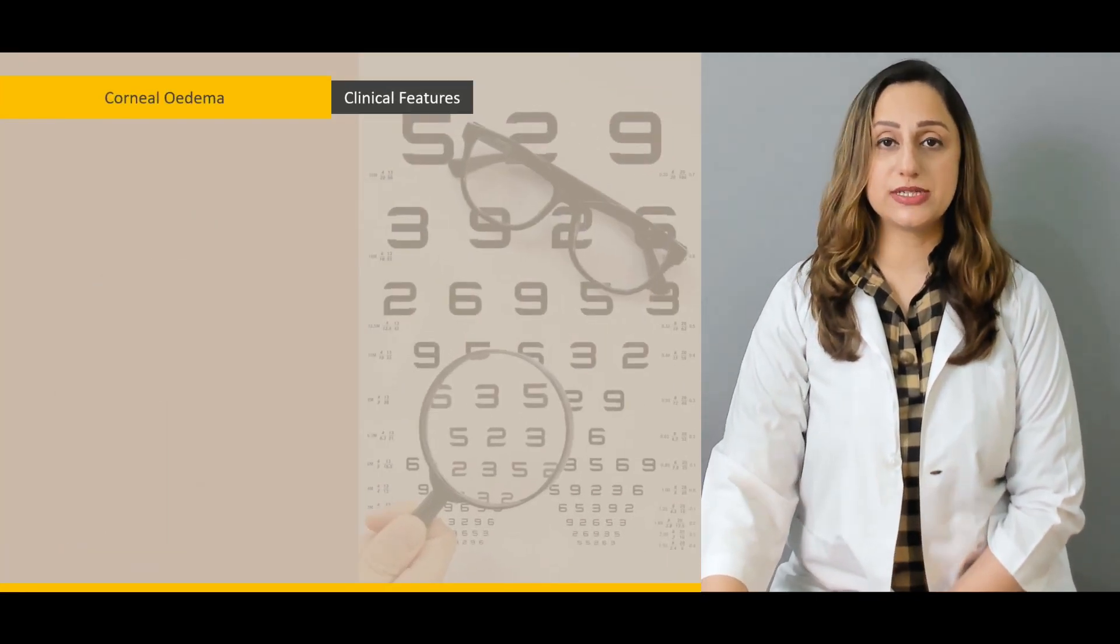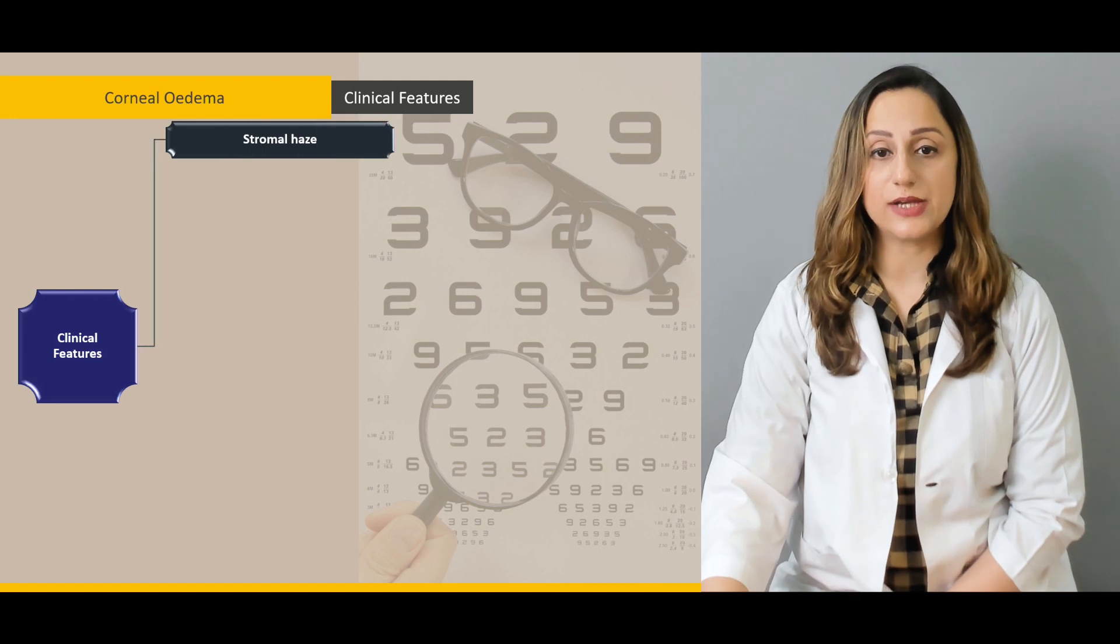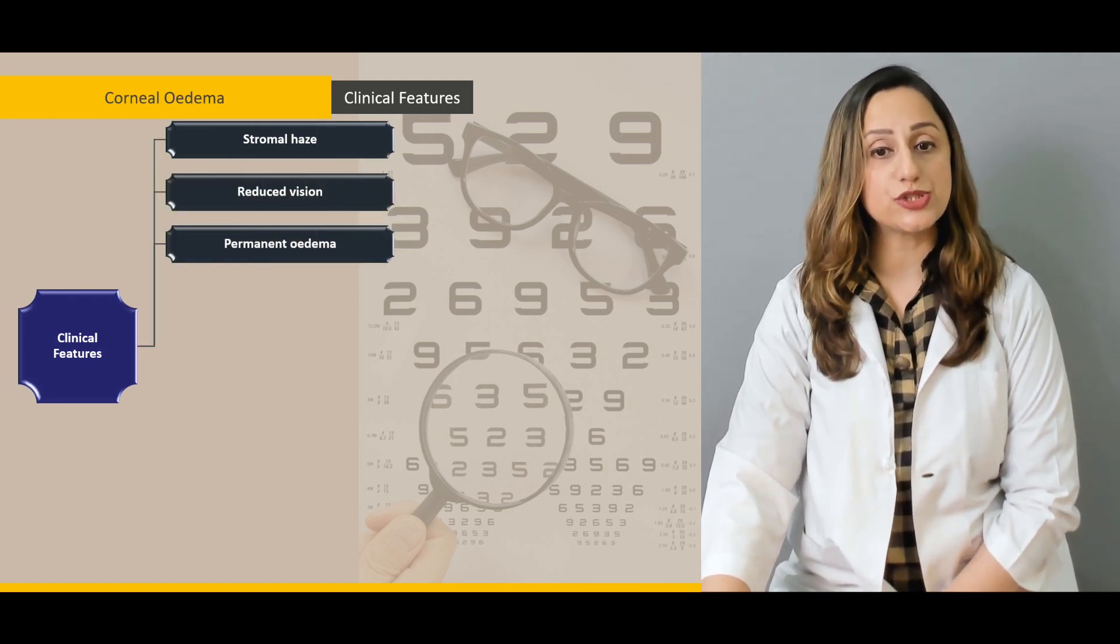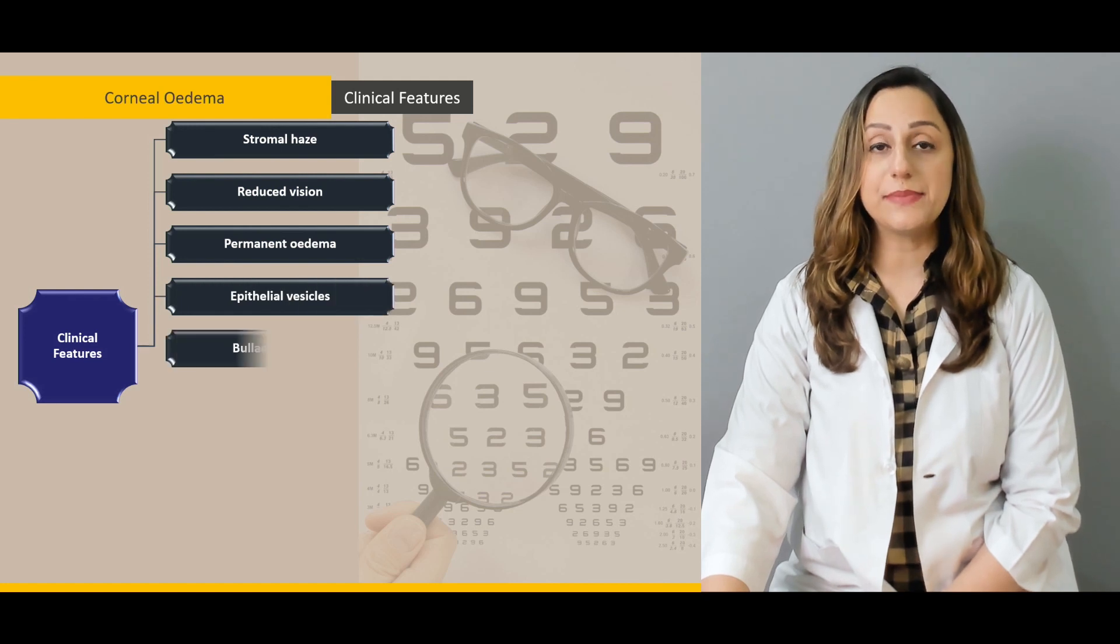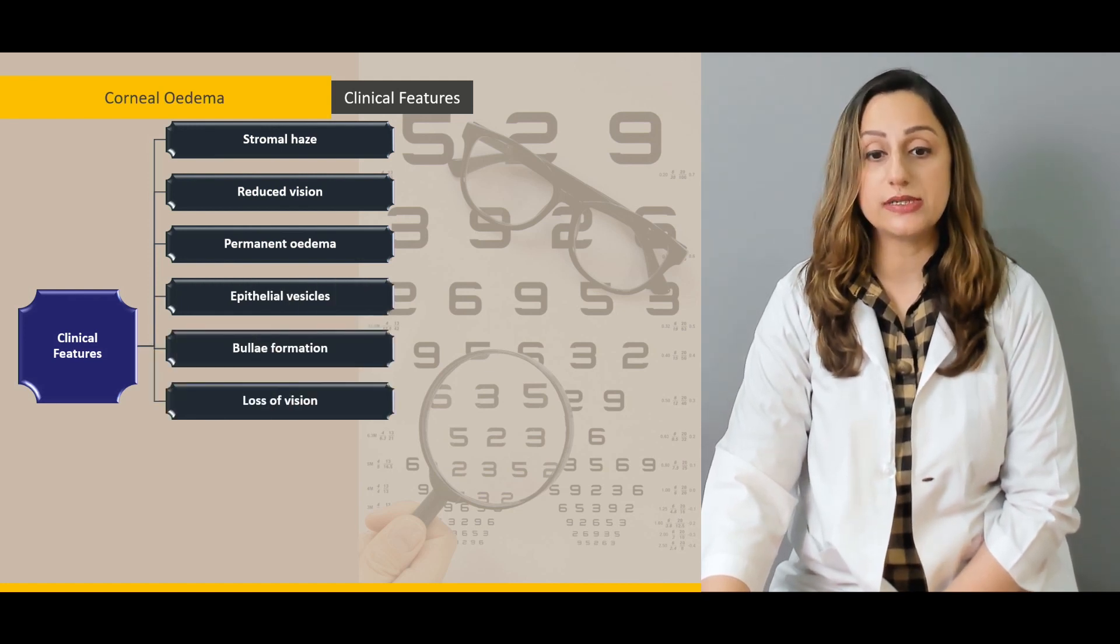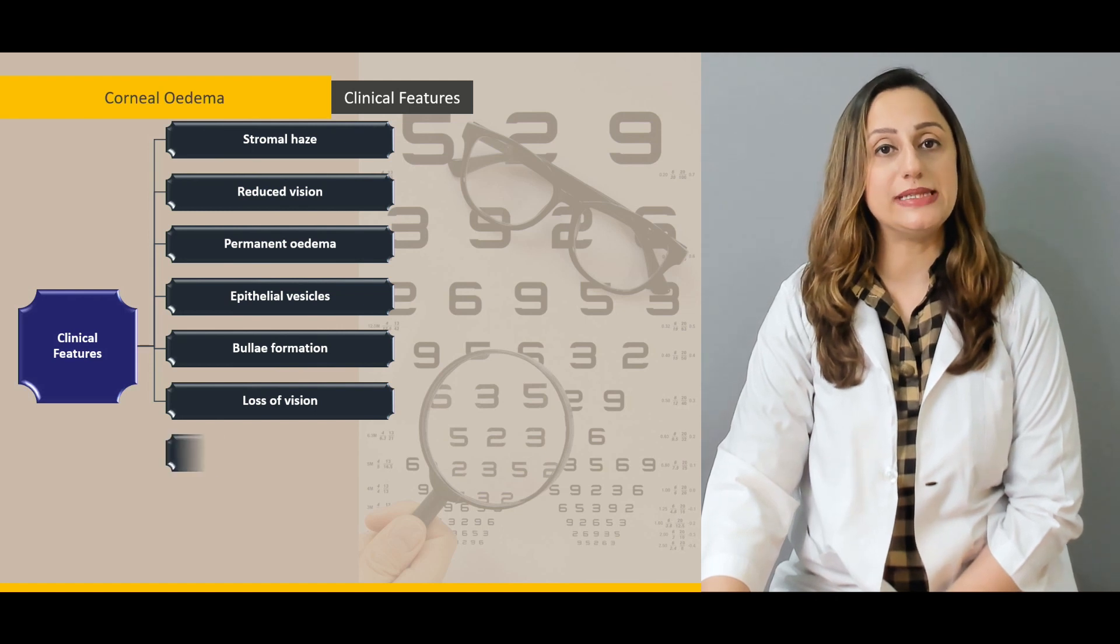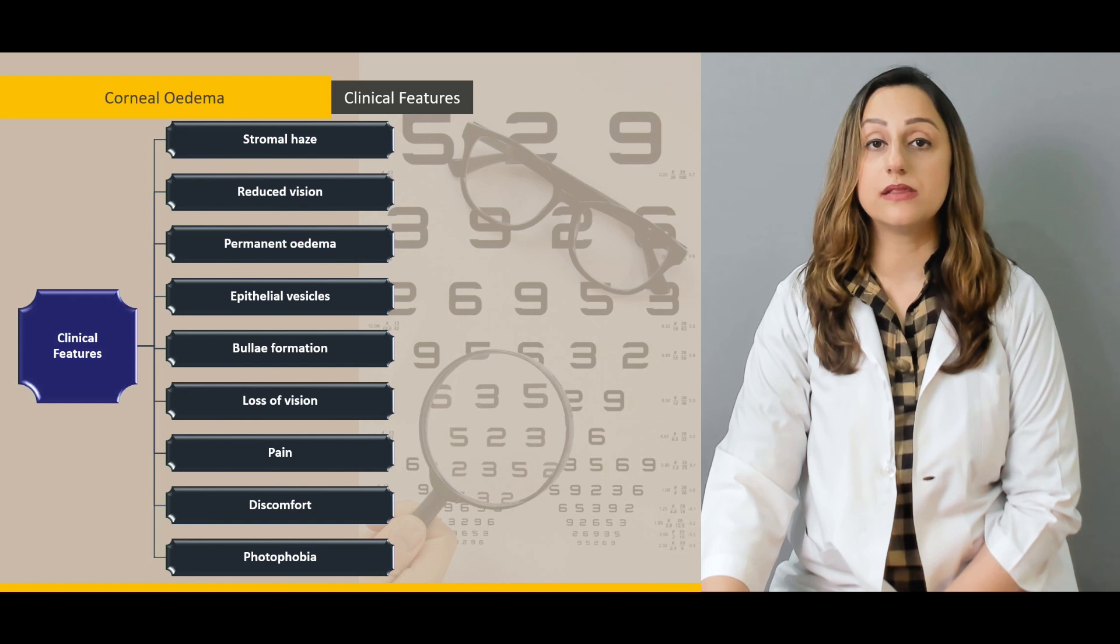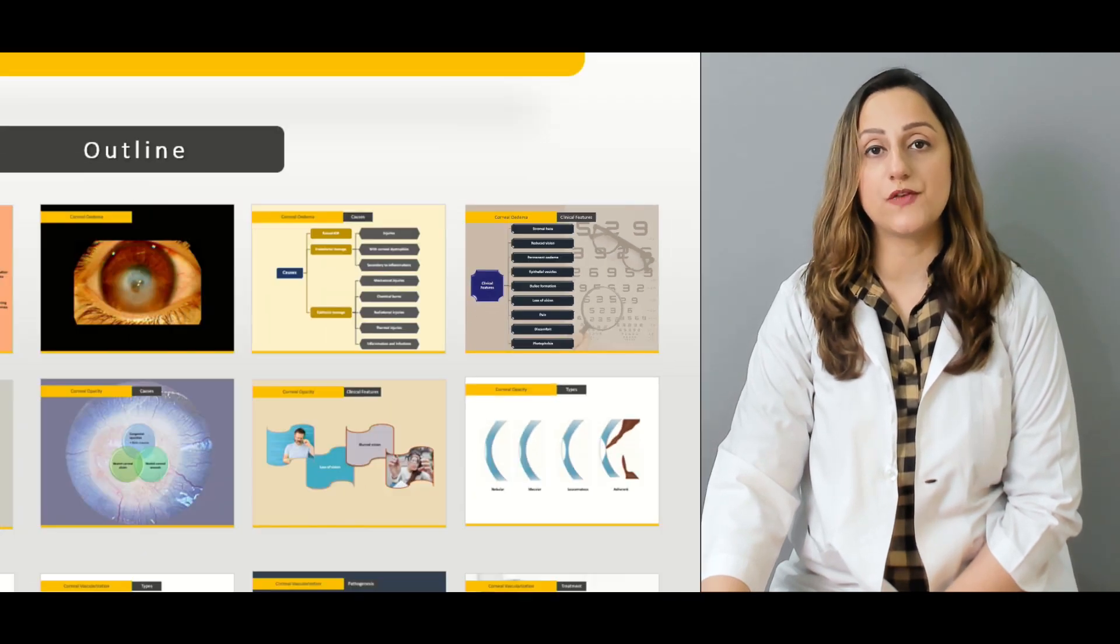The clinical features or symptomatologies that we have to look for are stromal haziness, reduced vision, permanent edema, epithelial vesicles and bullae formation, which is also coupled with loss of vision, pain and discomfort, along with sensations of photophobia which is experienced by the patient.